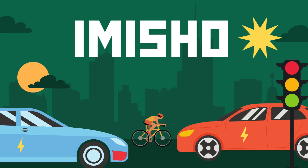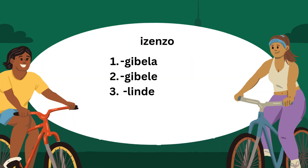Now let's look at the sentences that we can make using the modes of transport. These are the verbs that we are going to use now. Even though there are a lot of verbs that you can use, even the ones that we have learned before, like ngitanda — I like, ngitandi — I don't like, ngitenga — I am buying. You can use those as well.